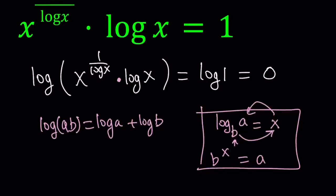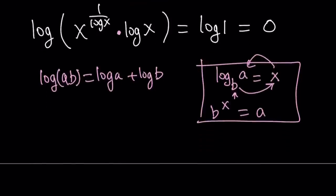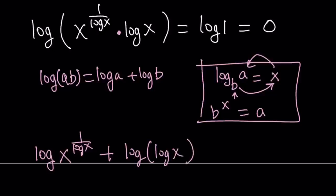Okay. So let's go ahead and use that property so that product turns into a sum. In other words, we get log x to the power 1 over log x plus log log x equals log 1 which is 0.